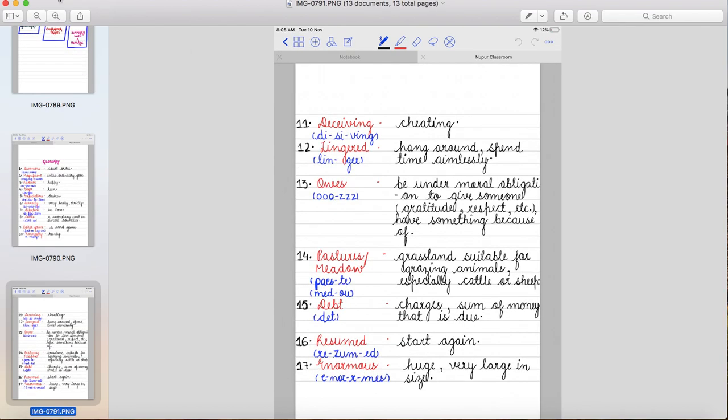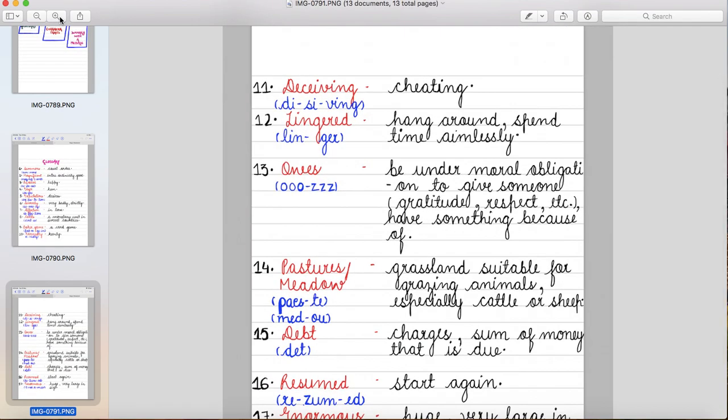Eleventh deceiving that means cheating, dhoka deena. Twelve linger that means hang around and spend time aimlessly, apna time waste karna.